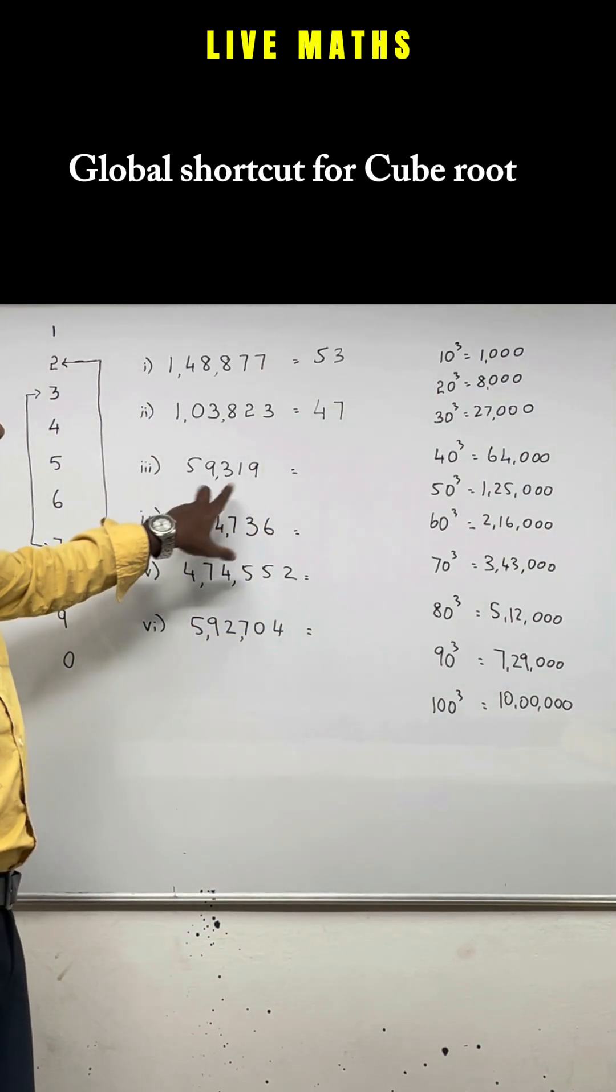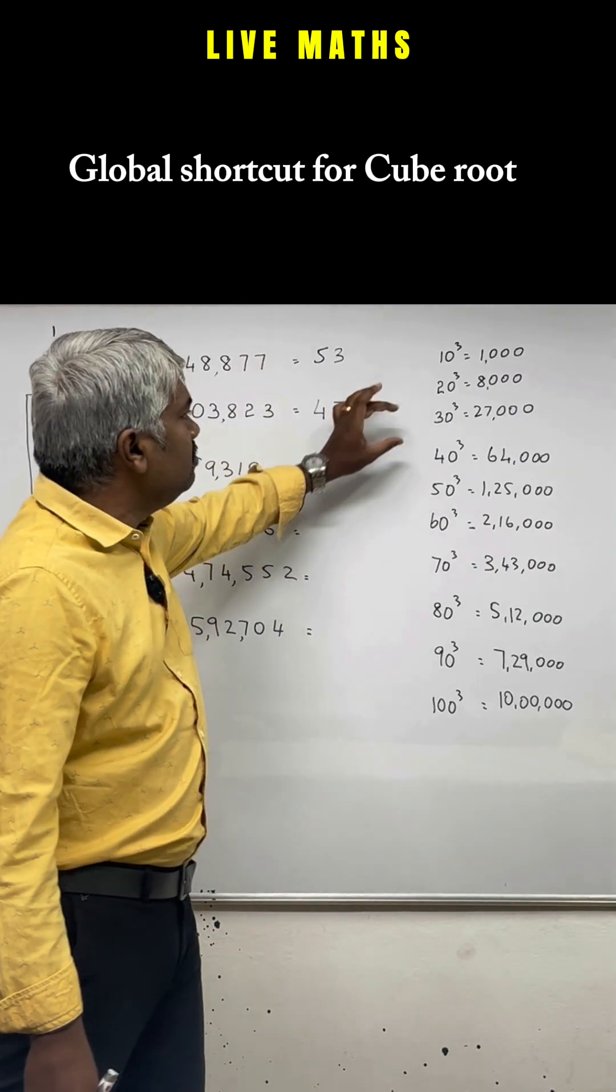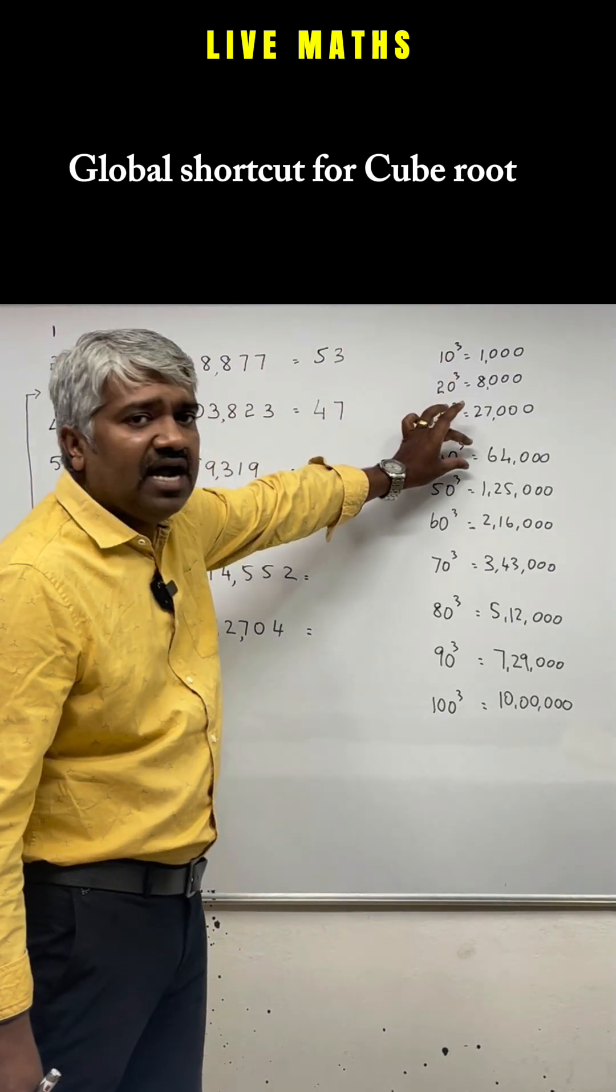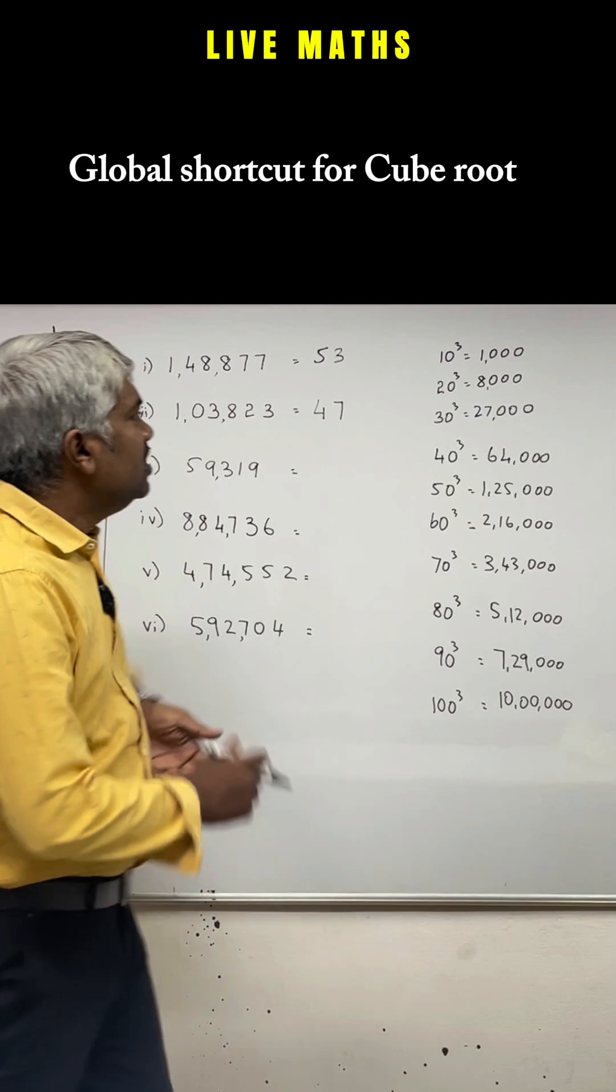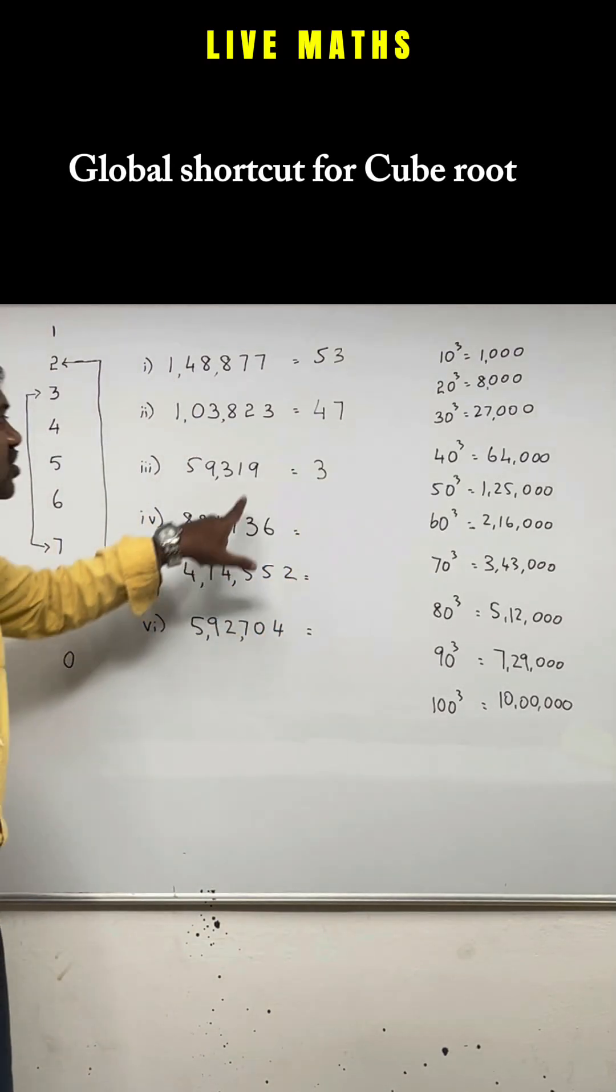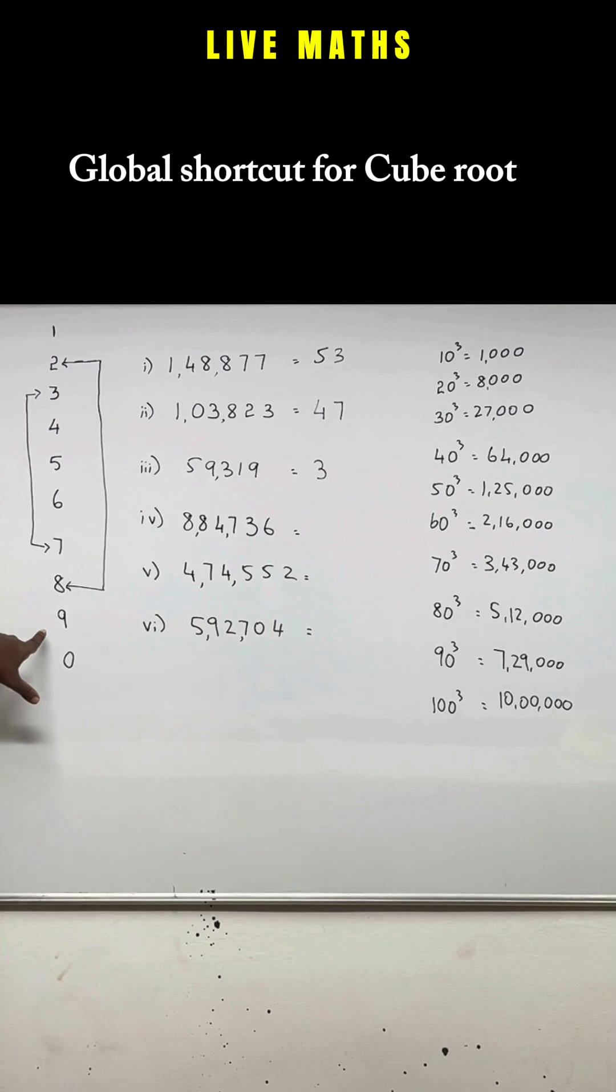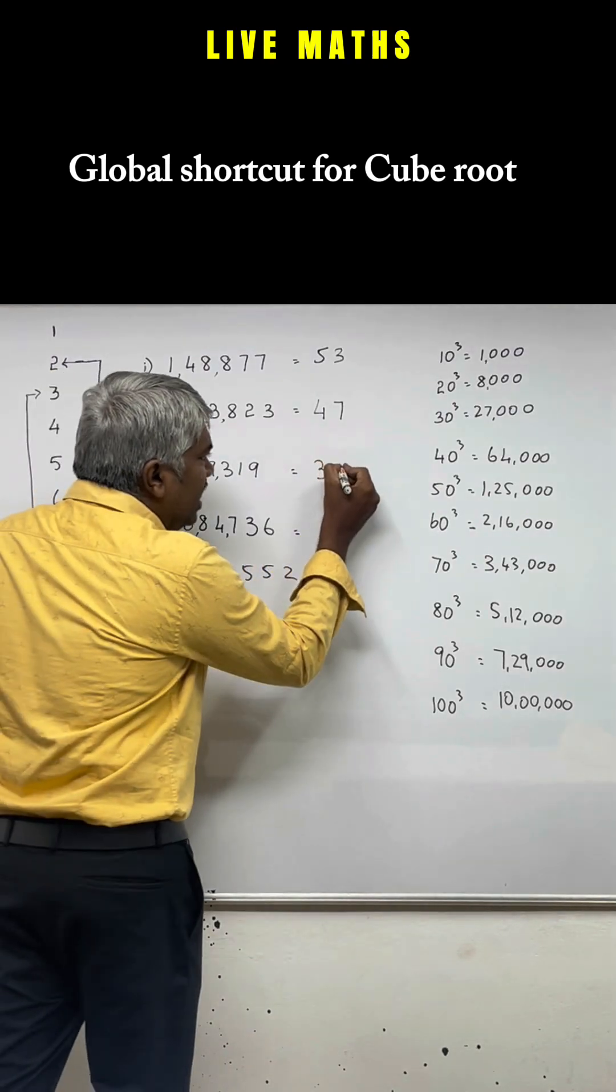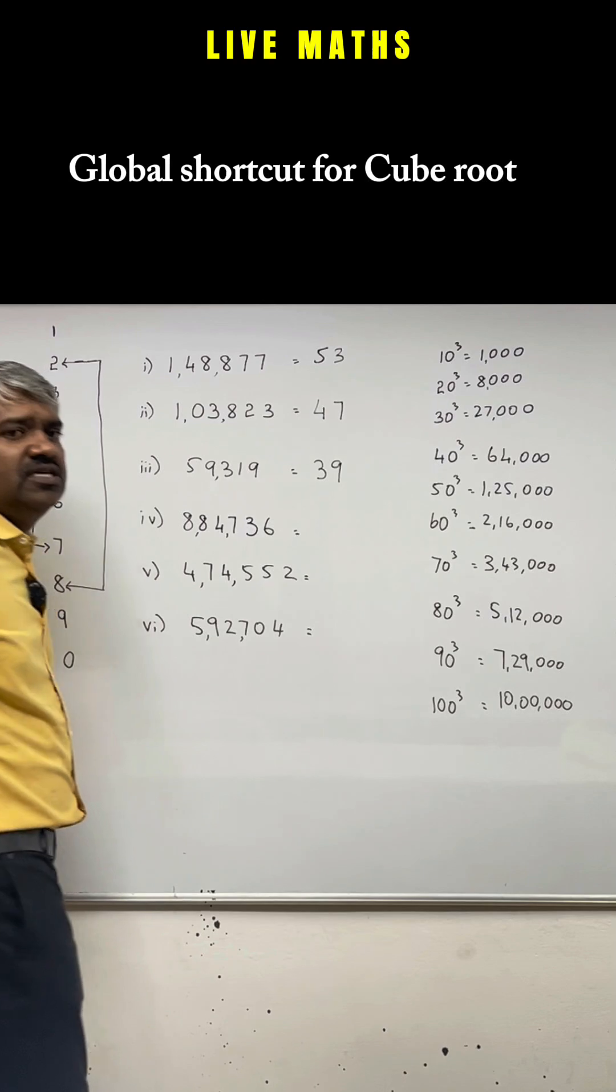Next, 59,319. Where does 59,000 come between 27,000 and 64,000, which is in 30s? So write 3. What is your last digit? 9. See, is 9 connected to anything? No, it is not connected to anything. So repeat the 9 as it is. Your answer is 39.